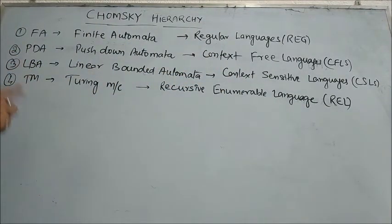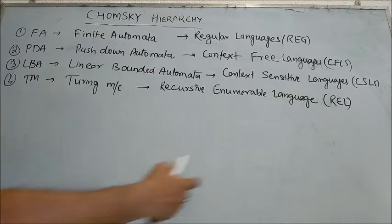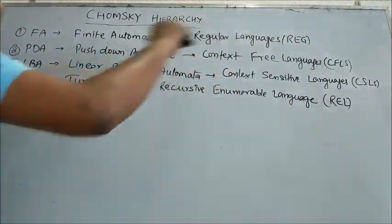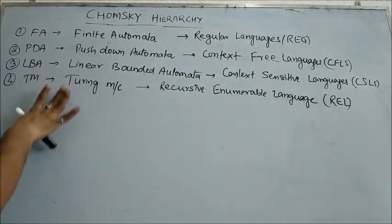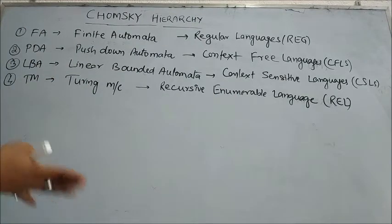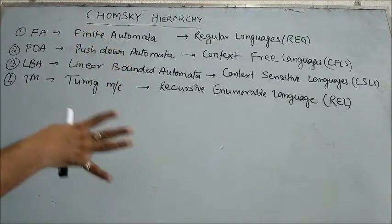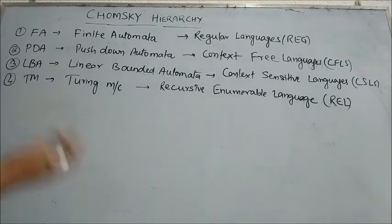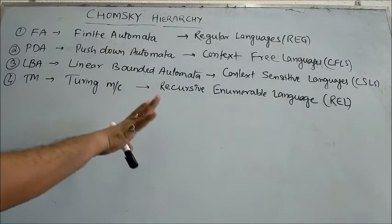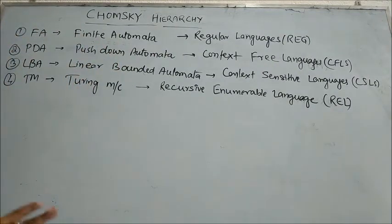For Turing Machine, the language accepted is REL — Recursive Enumerable Language. Chomsky Hierarchy tells about the relationship between these four languages which are accepted by these four machines respectively. We have four types of languages and these are somehow related with each other according to the Chomsky Hierarchy.